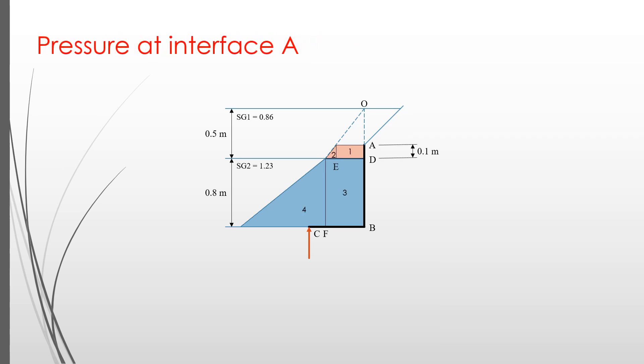One way to calculate the resultant force representing these two pressure distributions is by dividing the pressure distribution into several simple shapes. Here we divide into four simple shapes: a rectangle 1, a triangle 2, a rectangle 3, and a triangle 4. For each shape, we are going to calculate the resultant force and its point of application.